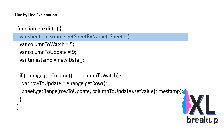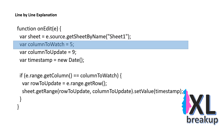This line gets the sheet named Sheet1 from the spreadsheet where the script is running. This line sets the variable ColumnToWatch to 5. This variable represents the column that we want to watch for changes — in this case, it's Column E, which is the 5th column.